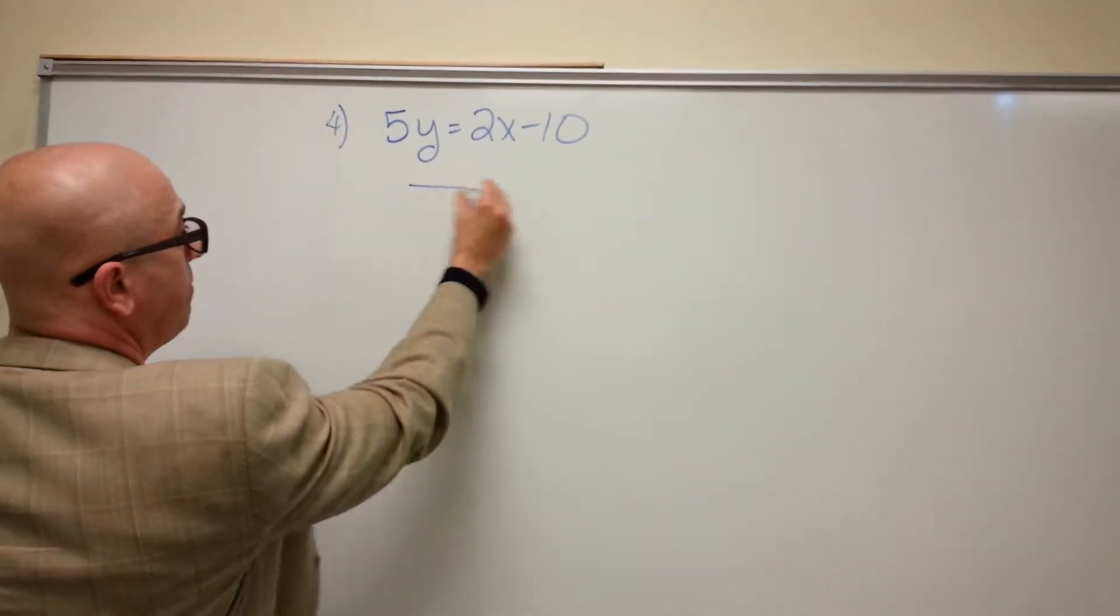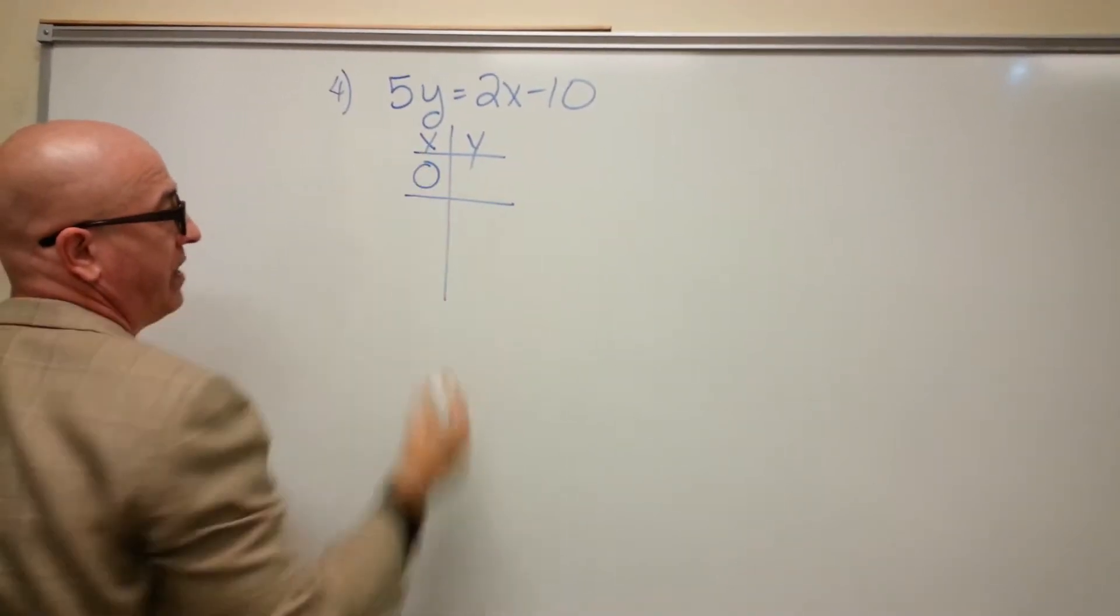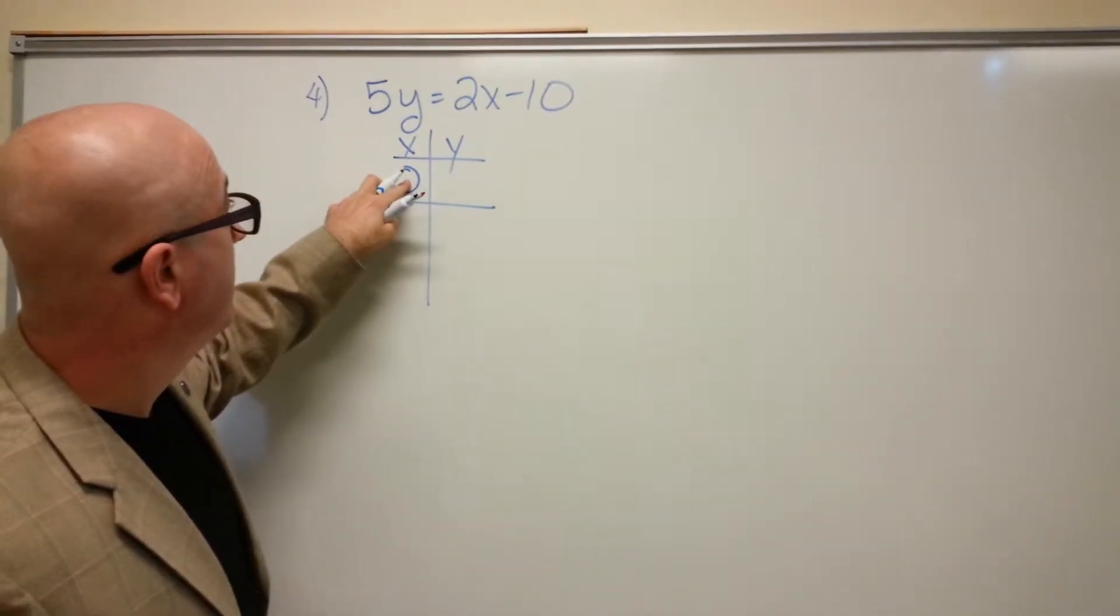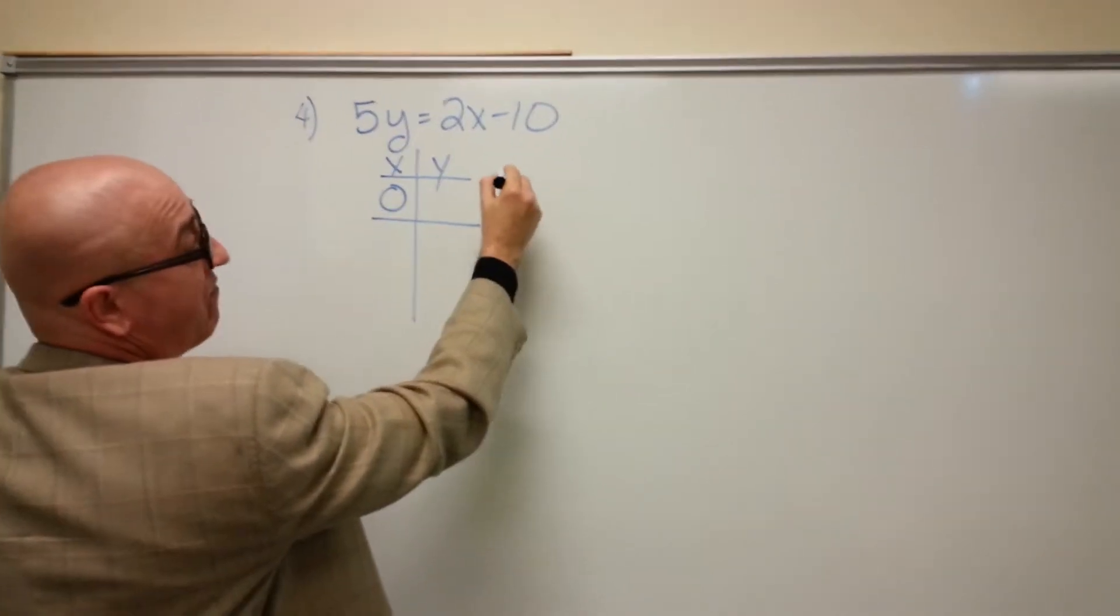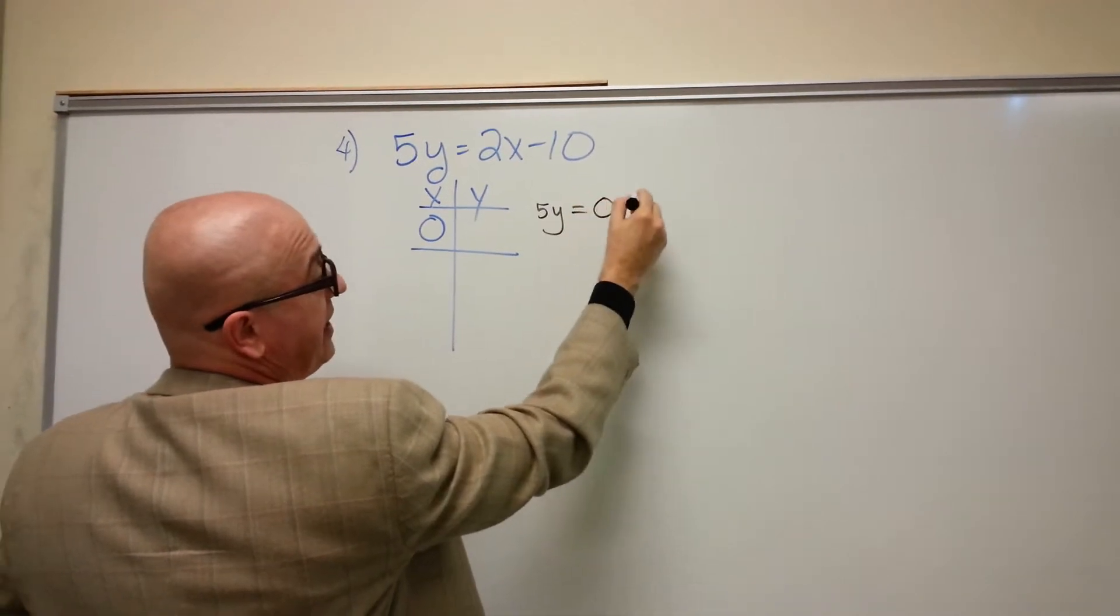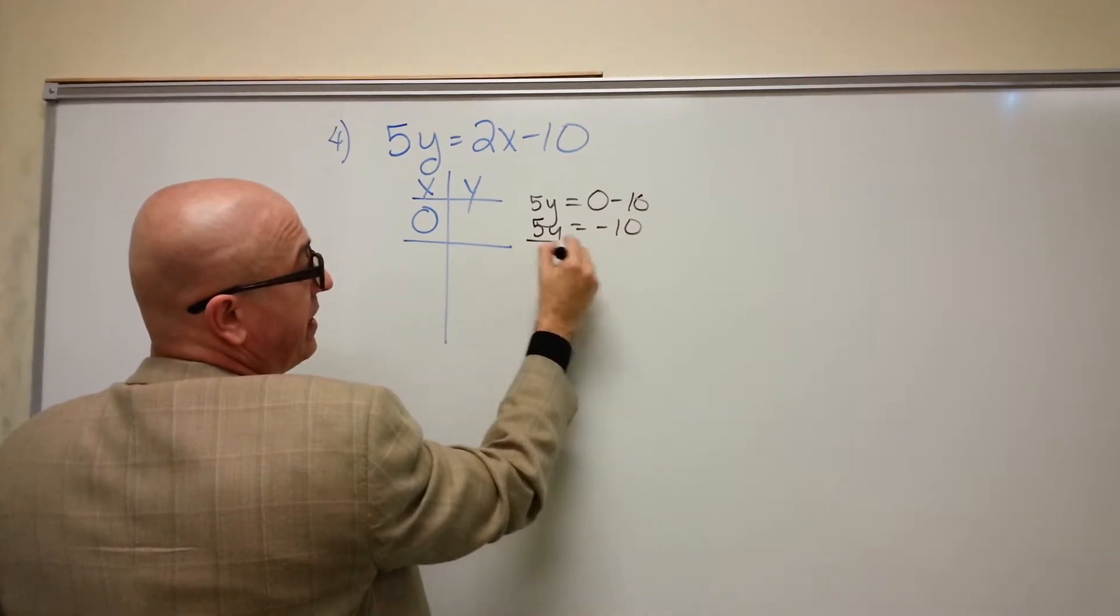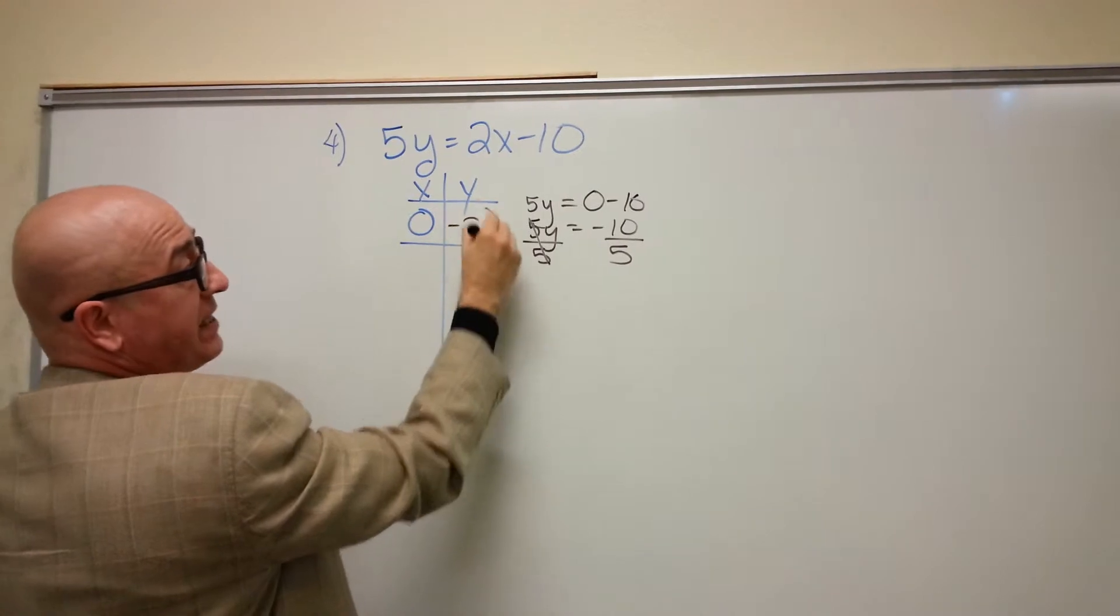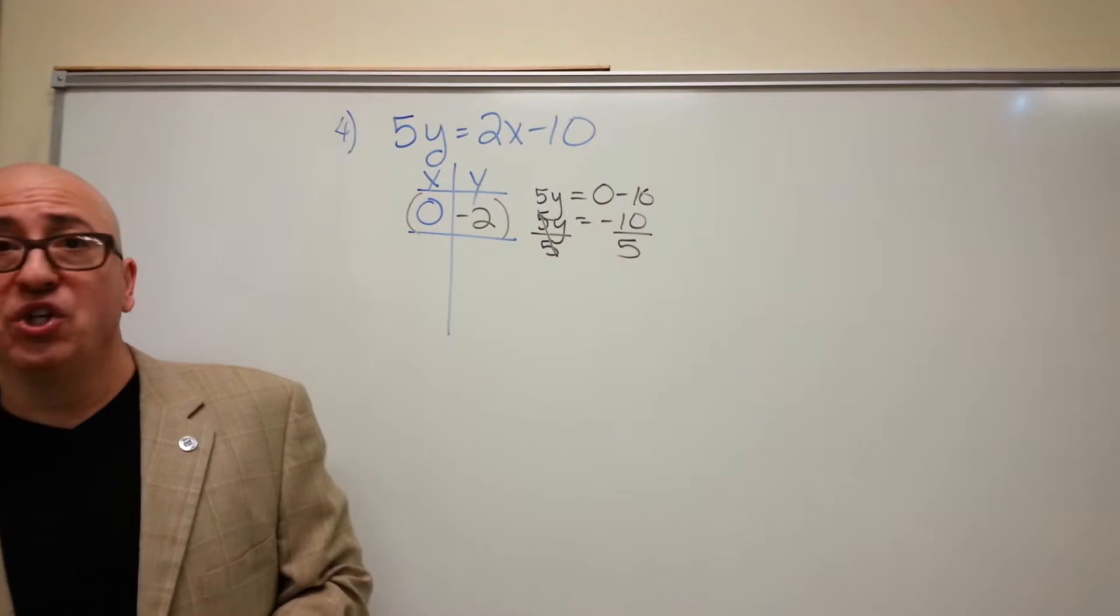So we have an xy table. The first thing it says is plug a 0 in for x. Let's figure out y. If I put a 0 here, we would have 5y equals 0 minus 10, 2 times 0. So 5y is negative 10, divide by 5, and y is negative 2. Let me punch that in, negative 2.